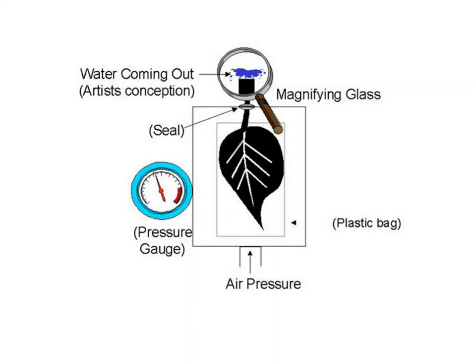Here is a scheme representing how we measure leaf water potential. We use a pressure chamber — a steel cylinder — and we put a leaf with the petiole coming out, then apply pressure inside the chamber. We have a manometer to measure the pressure, and we observe when a small drop of water appears at the petiole end. The amount of pressure applied at that point is equal to the water potential of the leaf.